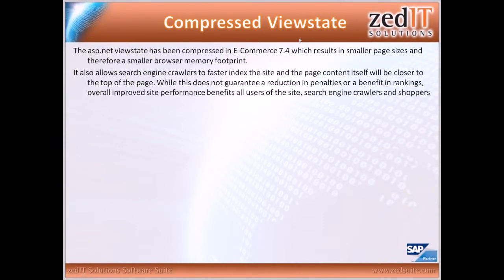Talking about view state now — in version 7.4, we've compressed it. The ASP.NET view state is used by ASP.NET to store information from the browser's interaction with the user. For instance, when you go to a page and fill out some fields, that data can be stored in the view state rather than making a trip back to the server, making for a faster browsing experience. The view state can get quite large, and it sits at the top of the page. Search engine crawlers used to index only 500KB to maybe one megabyte of a page, so if most of that was view state, it wouldn't be very useful content for them to index.